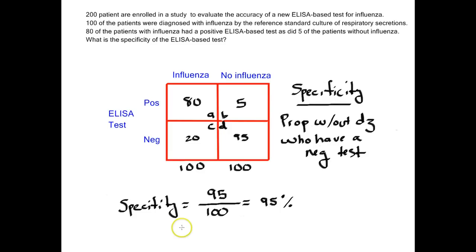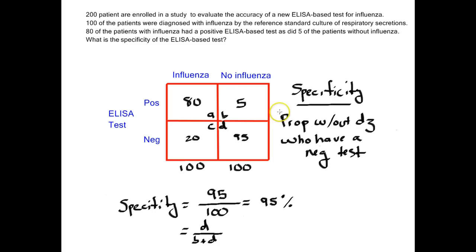If I want to look at the formula for this, I take everybody who did not have disease — that's these two boxes, B plus D — and figure out what percentage of all those folks had a negative test, which is box D. So the formula for specificity is D over B plus D. Again, it's worthwhile thinking of specificity as the proportion of people without disease who have a negative test, and then you'll be able to make the calculation without worrying about memorizing formulas.